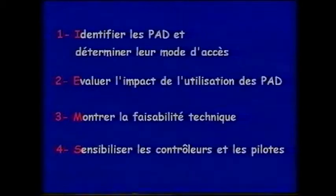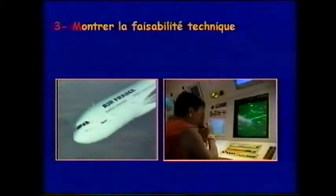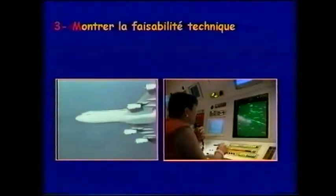Le troisième objectif consiste à montrer la faisabilité technique du concept à l'aide d'avions équipés. L'équipement embarqué à bord d'avions de quelques compagnies aériennes associées à une infrastructure expérimentale au sol déjà existante permettra de recueillir les PADs en grandeur réelle et de les afficher sur une position de contrôle en mode miroir.